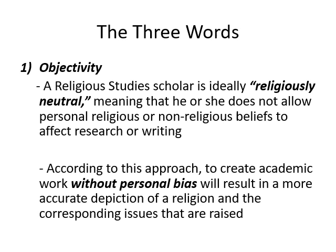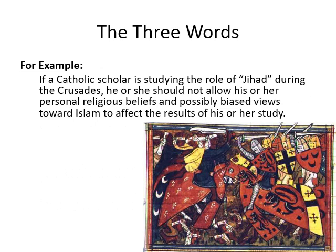What is objectivity? Objectivity refers to being religiously neutral. In this discipline, a religious studies scholar is ideally religiously neutral, meaning that he or she does not allow personal religious or non-religious beliefs to affect research or writing. According to this approach, creating academic work without personal bias will result in a more accurate depiction of a religion and the corresponding issues that are raised. For example, if a Catholic scholar is studying the role of jihad during the Crusades, he or she should not allow personal religious beliefs and possibly biased views toward Islam to affect the results of the study.